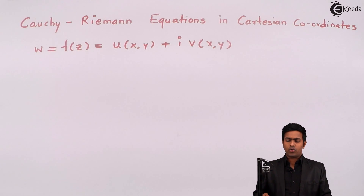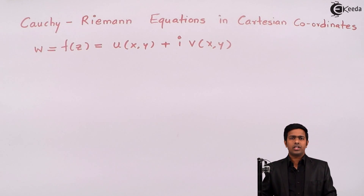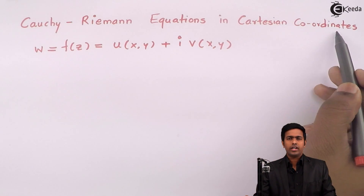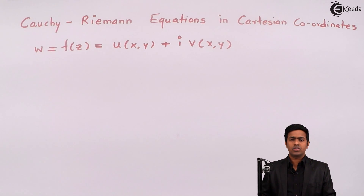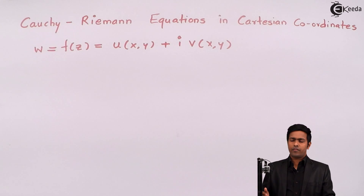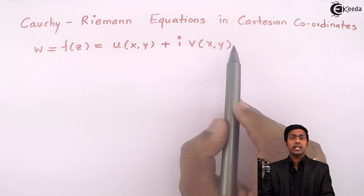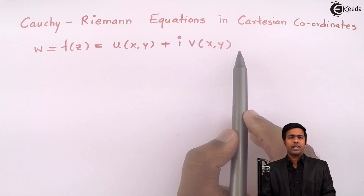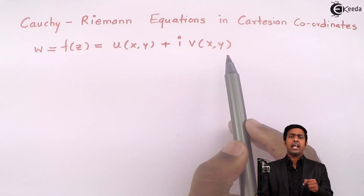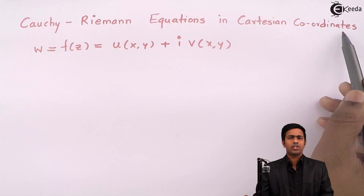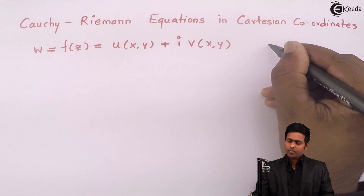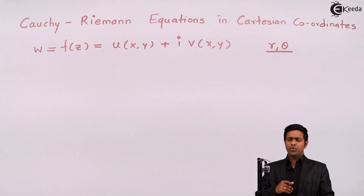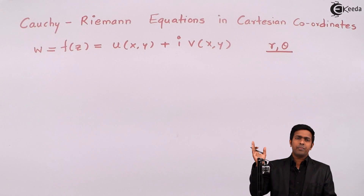There are two types of Cauchy-Riemann equations: one is in Cartesian coordinates and the other is in polar coordinates. The question is which one to use for a given function. It depends on the type of function. If the function is defined in terms of x and y, we use Cartesian coordinates. If it is defined in terms of r and theta, we use the Cauchy-Riemann equation in polar coordinates.